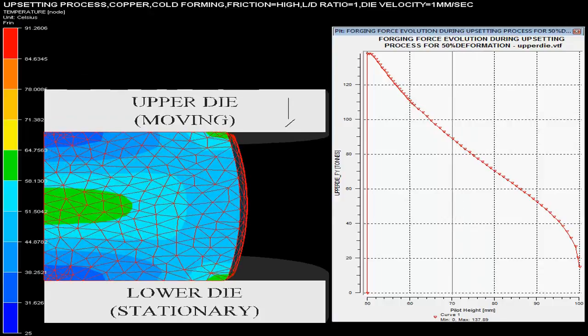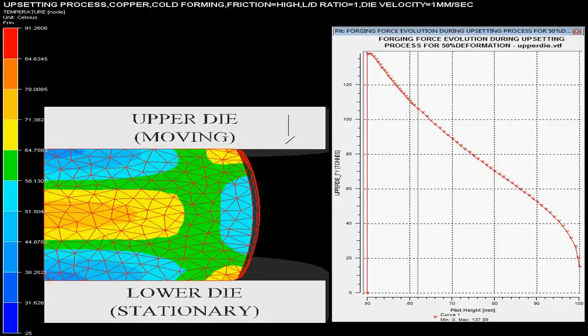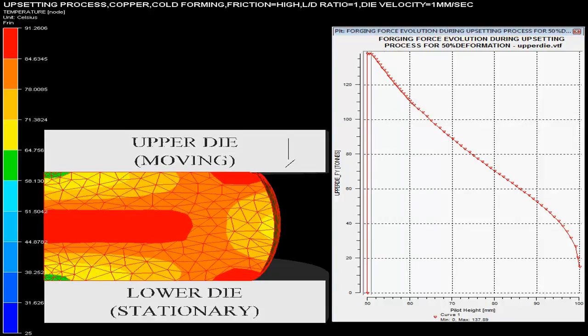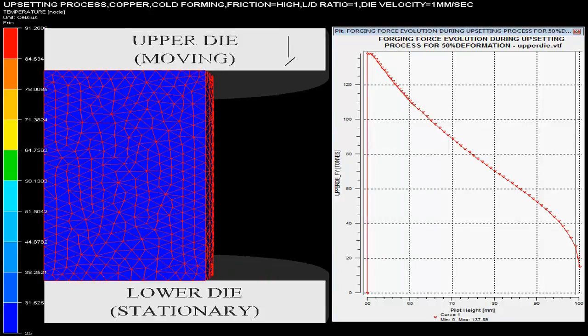High friction for billet and dies is shown on the top end in the video. The upper die presses with the velocity of 1 mm per second with the lower die stationary.